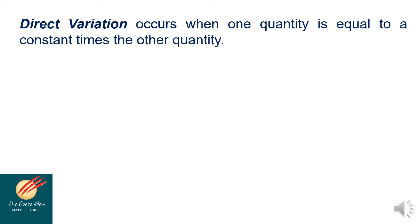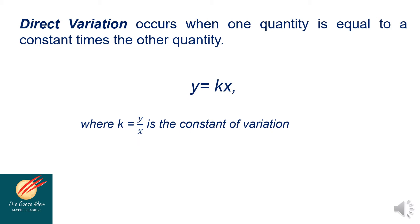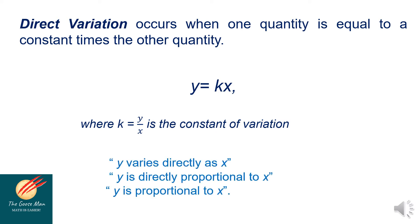Direct variation occurs when one quantity is equal to a constant times the other quantity. In symbol, we can rewrite this as y is equal to k times x, where k equals y over x is the constant of variation. Sometimes we call this the constant of proportionality. We can express this as: y varies directly as x, y is directly proportional to x, or y is proportional to x.